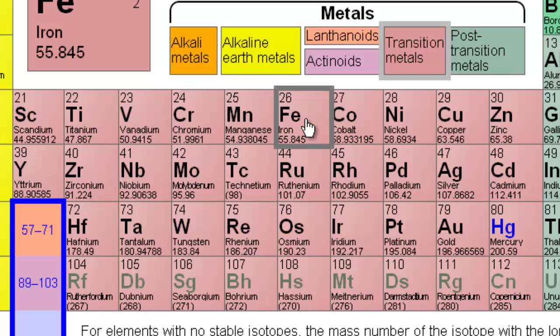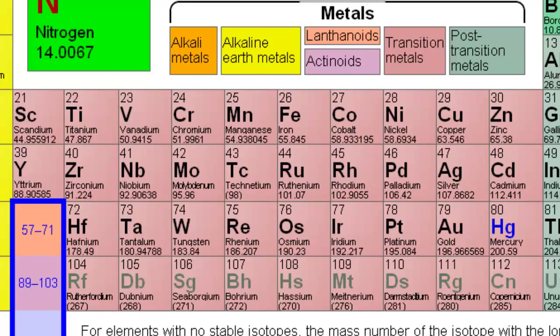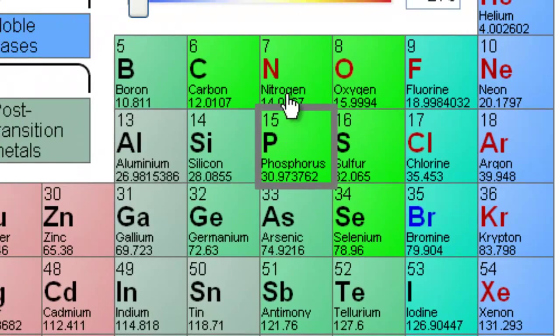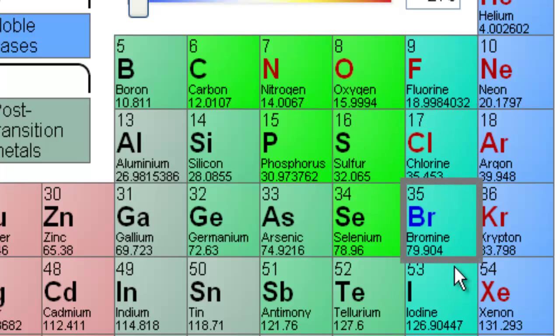One can determine the charge on the transition metal simply by knowing the charge of the anion. And one can do that simply by looking up a polyatomic ion in the list or memorizing them. Or just knowing that if it's a monatomic anion, nitrogen and phosphorus always negative 3, oxygen and sulfur negative 2, and halogens negative 1.